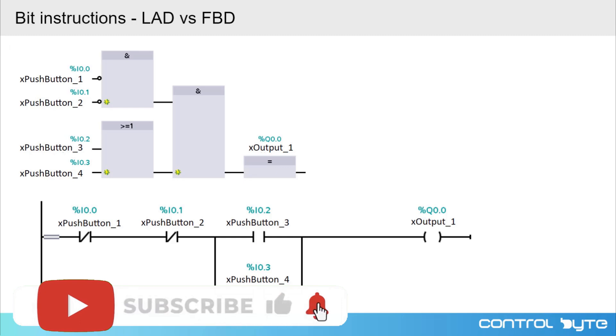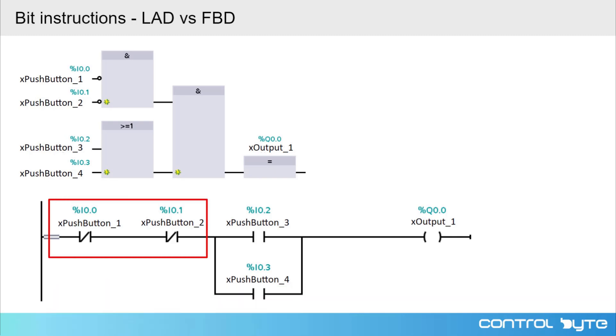Let's start with the LAD language program. We have here two normally closed contacts, X push button 1 and X push button 2, called in series. As you know, two NC contacts give the NOR logic gate. The same logic gate you can see here at the top in the left corner of the FBD program.